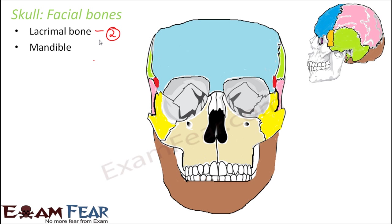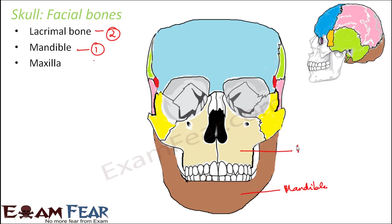The next facial bone is the mandible, shown in brown — the lower jaw bone. It forms the lower jaw, the chin, and the sides of the lower face, including the lower set of teeth. It is a single piece of bone.